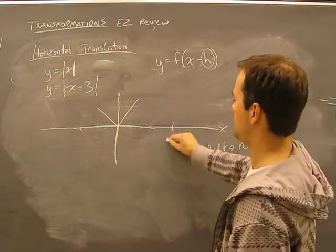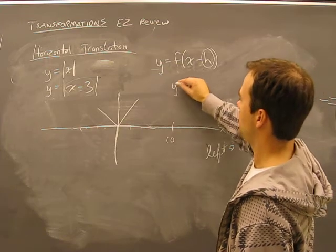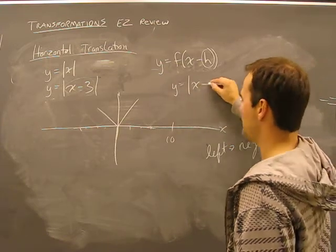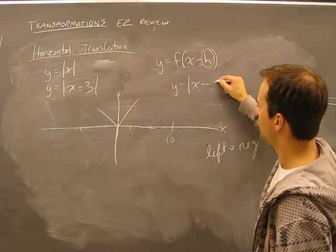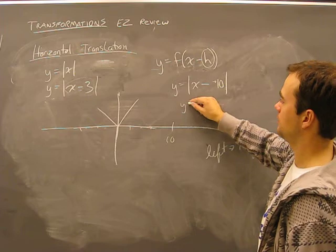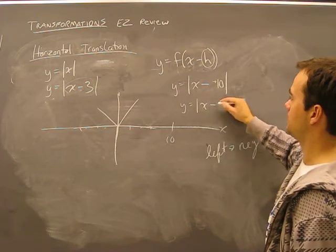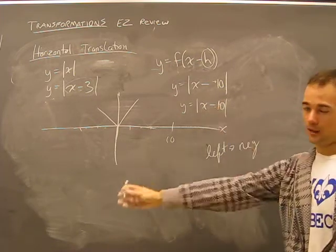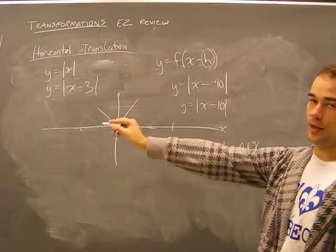If I wanted to move ten units right, y equals absolute value of x minus ten units to the right, minus a positive ten. Well, you know, in this case, that in fact is x minus ten.